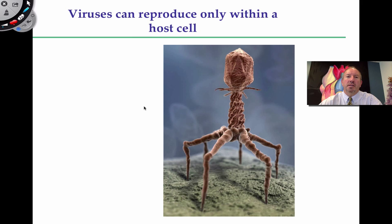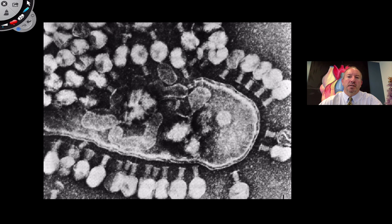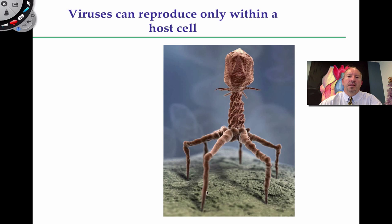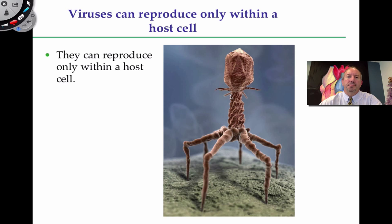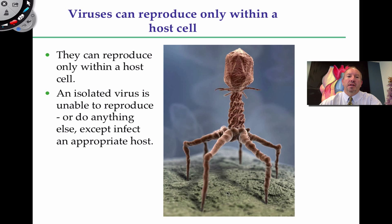What could have started with one virus then produces several hundred that will go on and infect subsequent cells — pretty brutal. A virus can reproduce basically only within the host cell. Here's a computer generated image of the virus sitting on top of the bacteria. When it attaches, these proteins are capable of changing their shape, and therefore this central column gets closer to the cell and injects its nucleic acid into the host.